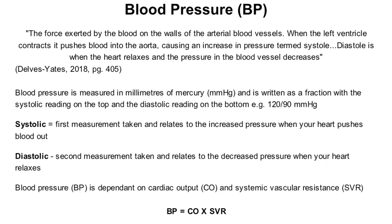Systolic is the first measurement taken and relates to the increased pressure when your heart pushes blood out. The diastolic reading is the second measurement taken and relates to the decreased pressure when your heart relaxes. Blood pressure is dependent on cardiac output and systemic vascular resistance. This can be shown as: blood pressure equals cardiac output times systemic vascular resistance.